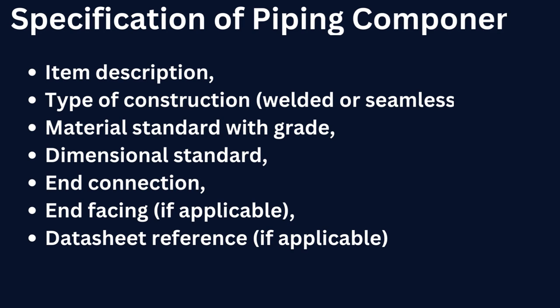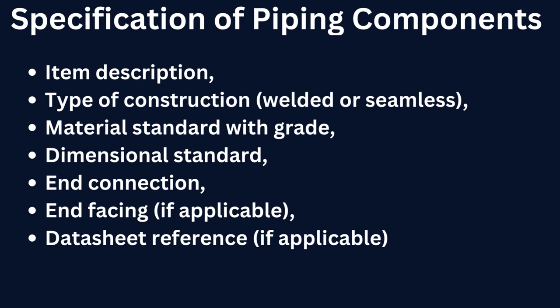Specification of piping components: any piping component is specified by item description, type of construction (welded or seamless), material standard with grade, dimensional standard, connection and facing if applicable, and data sheet reference if applicable.